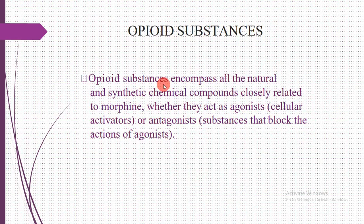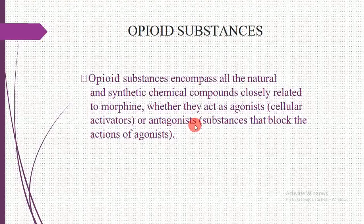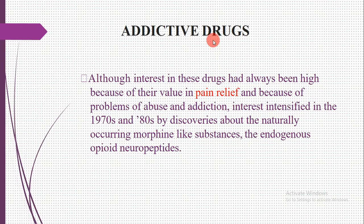Opiate substances encompass all natural and synthetic chemical compounds closely related to morphine, whether they act as agonists — cellular activators — or antagonists. Substances that block the action of agonists are called antagonists. So: agonists are activators, and antagonists are blockers of agonists.